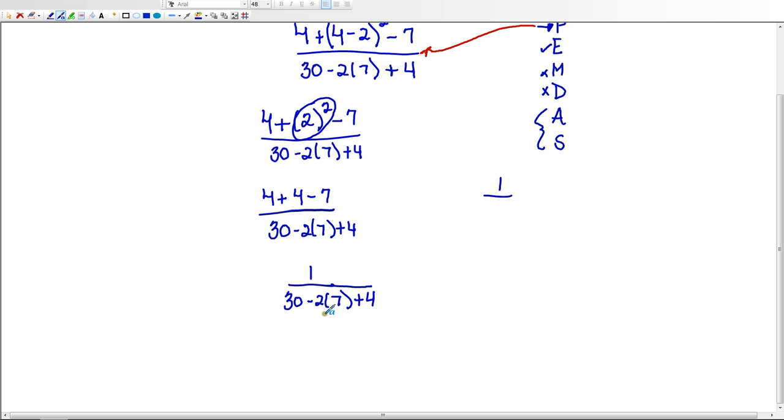This set of parentheses are only indicating that we're multiplying negative 2, or minus 2 here, times 7. So we don't really consider that a grouping symbol in terms of parentheses. So we would say that we have no parentheses for exponents, we have no exponents.